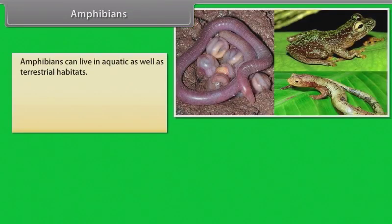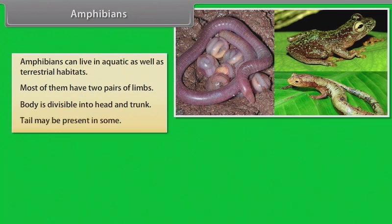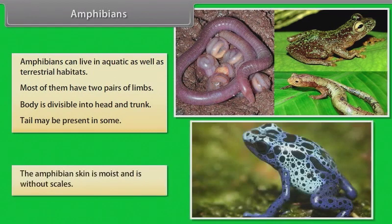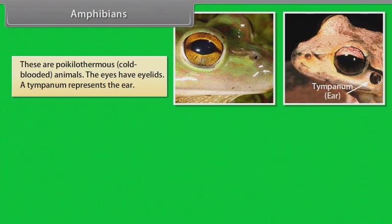Amphibians. Amphibians can live in aquatic as well as terrestrial habitats. Most of them have two pairs of limbs. Body is divisible into head and trunk. Tail may be present in some. The amphibian skin is moist and without scales. These are poikilothermous, that is, cold-blooded animals. The eyes have eyelids. A tympanum represents the ear.